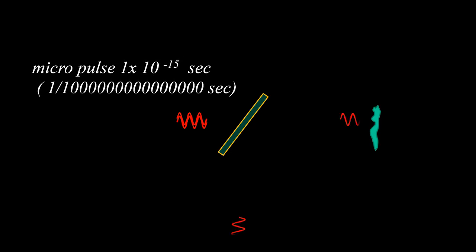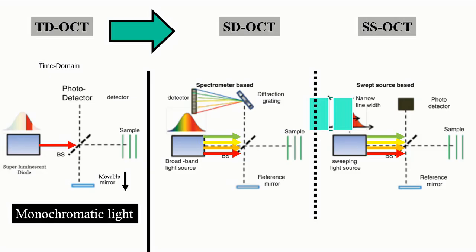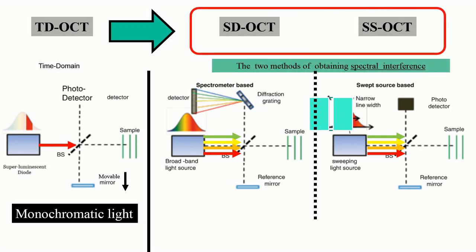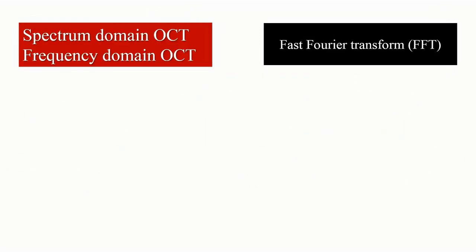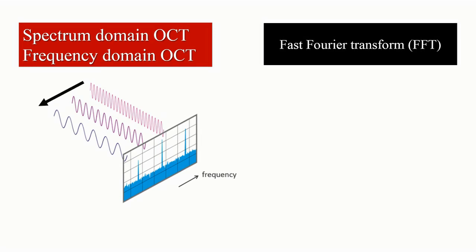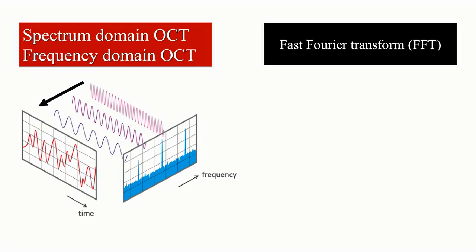Light is pulsed in very small micro-pulses. In spectral domain and swept source OCT, we use broadband light — not a single wavelength, but all bands of light together. Spectral domain depends on the fast Fourier transform, which is why it is also called frequency domain OCT. If we have three waves with three different wavelengths and three different frequencies passing together, the combined result is a complex wave configuration.